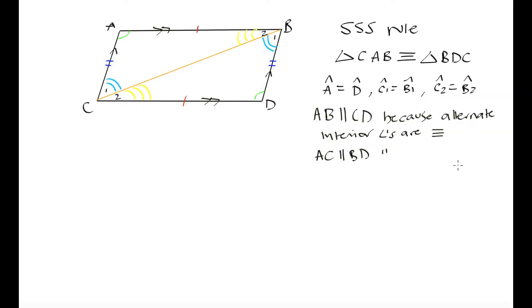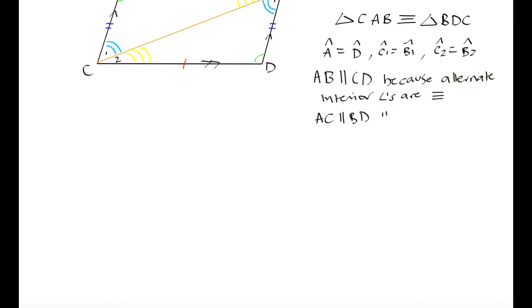In the last video we looked at a quadrilateral that had opposite sides of equal lengths and showed that those opposite sides were parallel to one another, concluding it was a parallelogram. Now the next thing I want to go over is one more property of parallelograms: the diagonals of parallelograms are going to bisect one another.